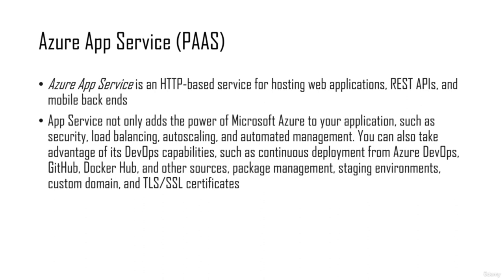In this section, we'll talk about Azure App Service, which is basically the platform as a service provided by Azure. Azure App Service is an HTTP-based service for hosting web applications, REST APIs, and mobile backends. The main reason to use Azure App Service is to offload security, load balancing, auto scaling, and automated management to Microsoft Azure — so you don't need the hassle of creating virtual machines, load balancers, and auto scaling configurations yourself.